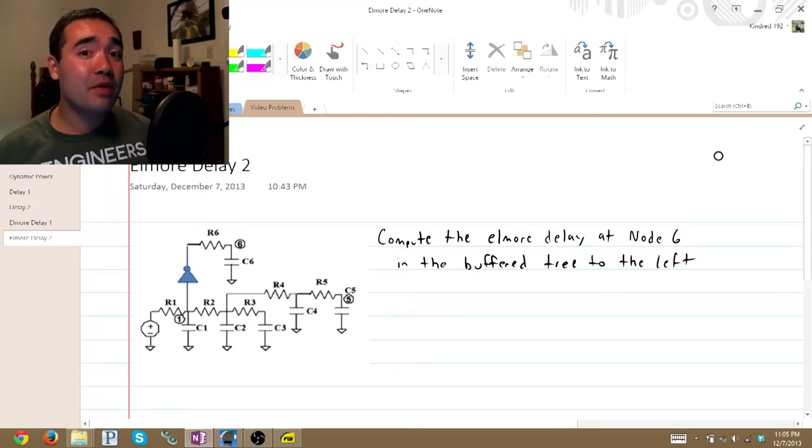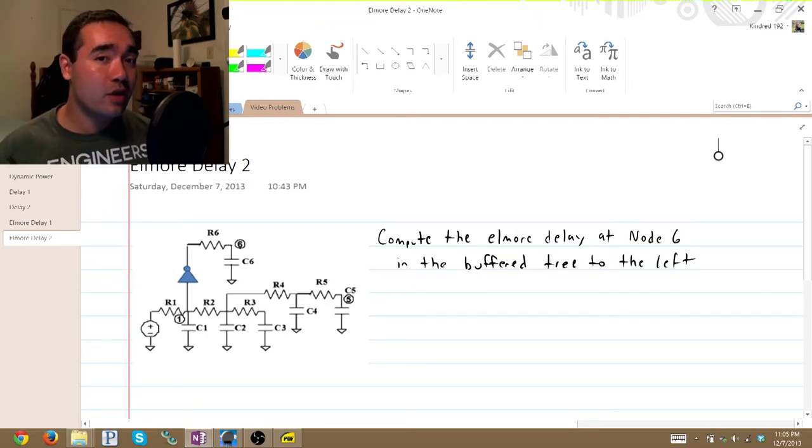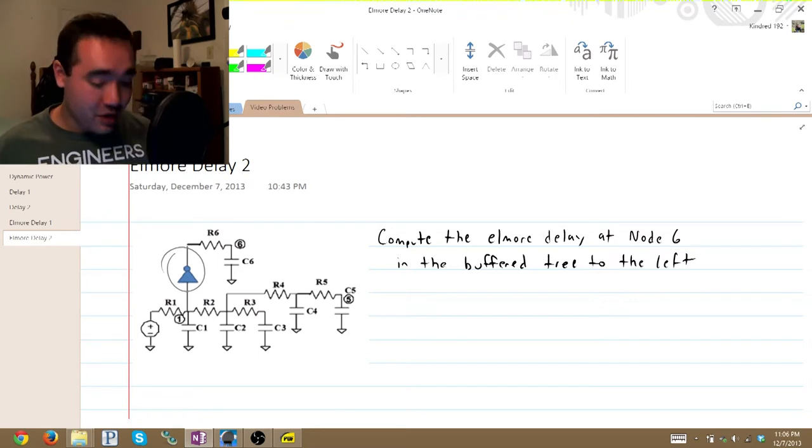Hi, I'm George, and I'm here with another EE video. Now, this problem down here might look really familiar. I recently did another Elmore delay problem that looks just like this, except for that buffer. Now, what does that buffer do? That's exactly what this question is asking us.